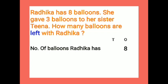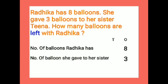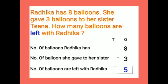We need to make statements to solve the word problem. The first statement is made from the first sentence: 'Number of balloons Radhika has — 8.' Since 8 is a single-digit number, we write it in the ones place. The second statement from the next sentence: 'Number of balloons she gave to her sister — 3.' We put the subtraction symbol in front of the second number.